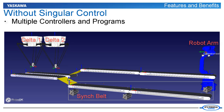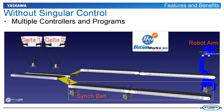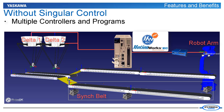Yaskawa's singular control platform simplifies this application by allowing the robot and the conveyors to be programmed using MotionWorks IEC and commanded by one MPIEC controller. This in turn reduces the number of projects needed for this system down to a single project. This is also beneficial when maintaining the machine because only one project needs to be modified versus multiple projects in different manufacturer software platforms.